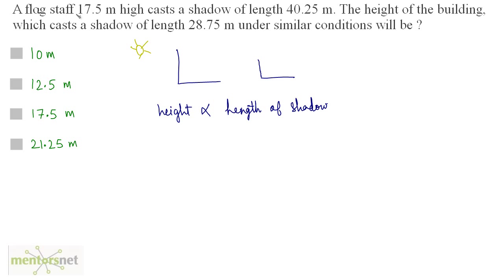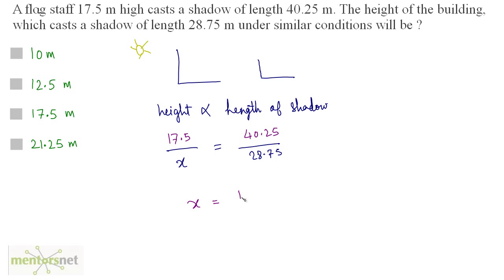The height of the flagstaff is 17.5 meters and it casts a shadow of length 40.25. The height of the building is what we have to find if it casts a shadow of length 28.75. These are directly proportional so I can take the ratio and equate them. The unknown value equals 17.5 times 28.75 divided by 40.25, which gives 12.5. So the correct answer is option B.